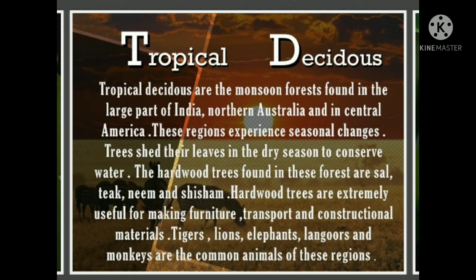Second, tropical deciduous forests. These are the main monsoon forests found in large parts of India, northern Australia and central America. These regions experience seasonal changes. Trees shed their leaves in the dry season to conserve water. Hardwood trees found here include sal, teak, neem and shisham. These hardwood trees are extensively used for making furniture, transport and construction materials. Tigers, lions, elephants, langurs and monkeys are the common animals of these regions.